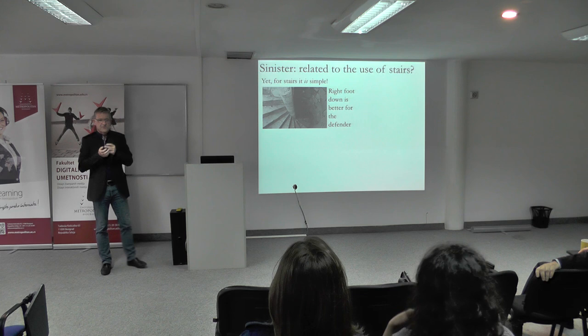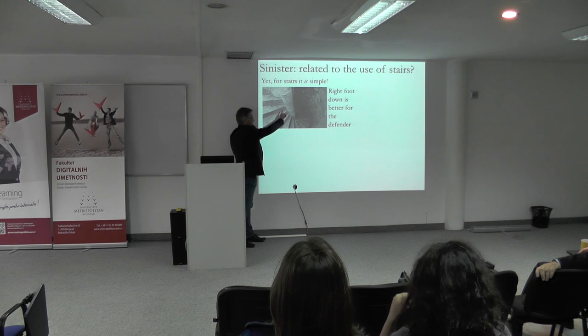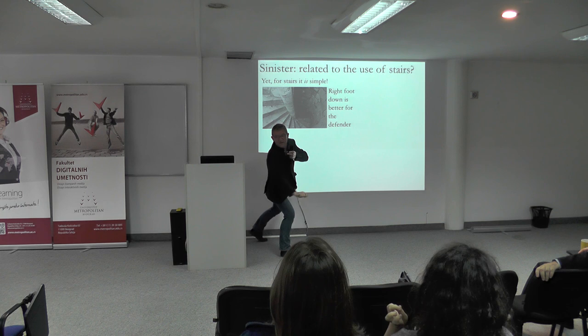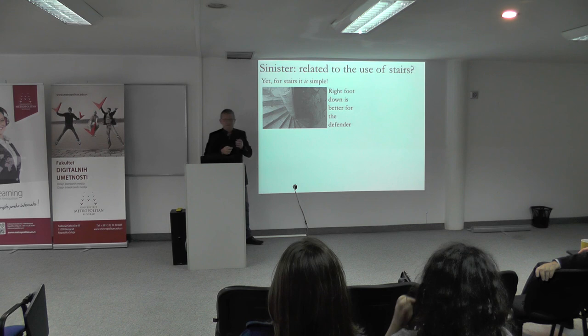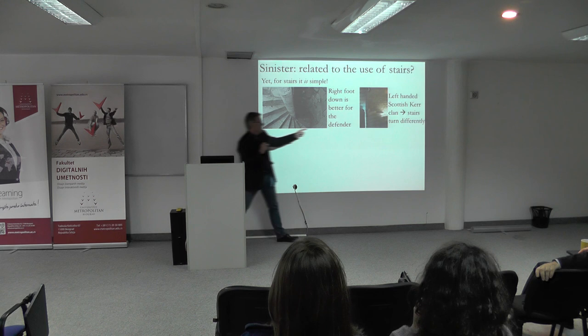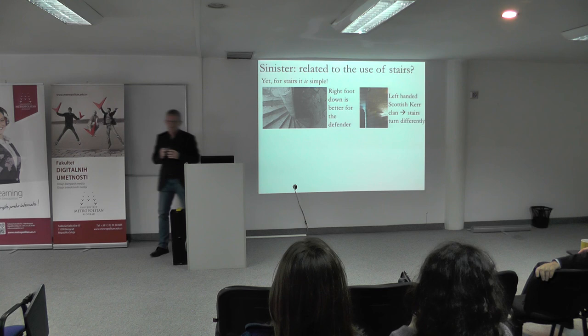Another explanation is for stairs — it's simple. If you're right-handed and you're on this stair, you want to build a good castle: your stair will go up like this because then you can defend more easily against somebody who comes up. And this makes sense, because there was a people in Scotland — the Kerr family — they were mostly left-handed, and they built their stairs the other way around. You can still visit it. This must have been a shock for the attackers — the left-handed castle.